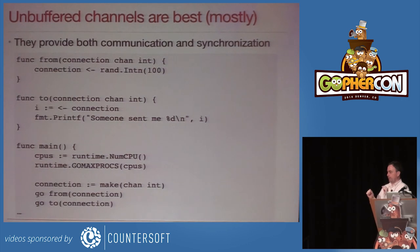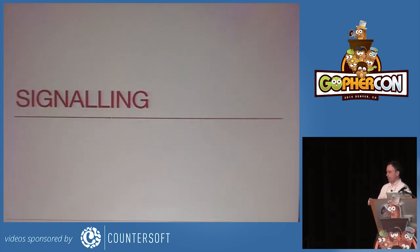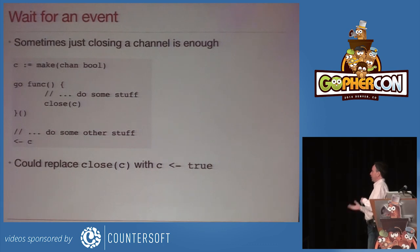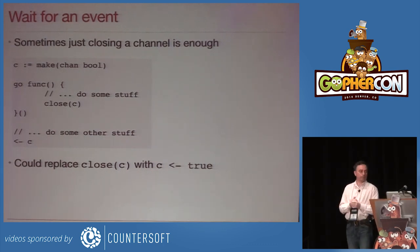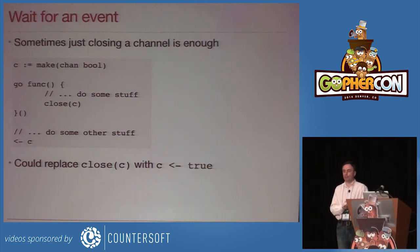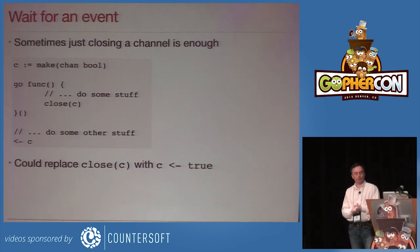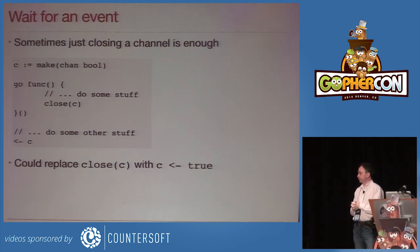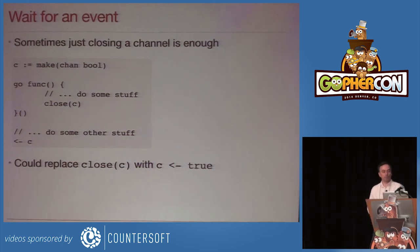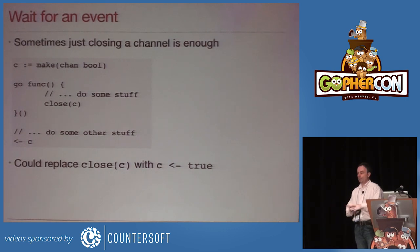One of the interesting things is that since communication and synchronization are the same thing, channels are quite useful without actually sending any data — just for signaling. Sometimes it's good enough just to wait for a channel to be closed. In this example, a goroutine does something and closes a channel, and some other goroutine just sits and waits for that channel to close. There's no actual communication of data; it's just a synchronization event, but it's very explicit and easy to examine.